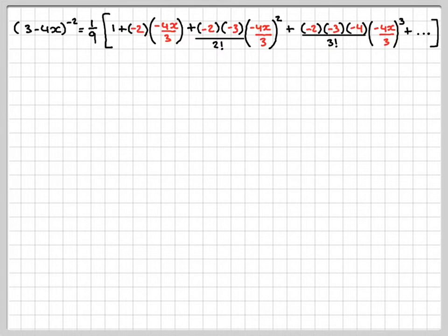Just writing that out again and now doing a bit of expanding. We'll leave the first bit. So -2×-3/2! is 3, and (-4x/3)² becomes +16x²/9. So very careful use of brackets when you're doing these questions.